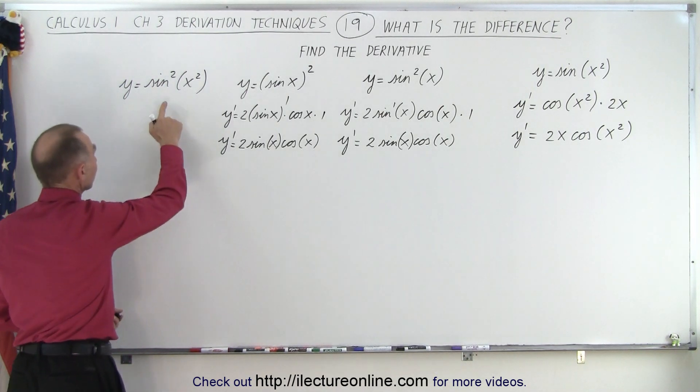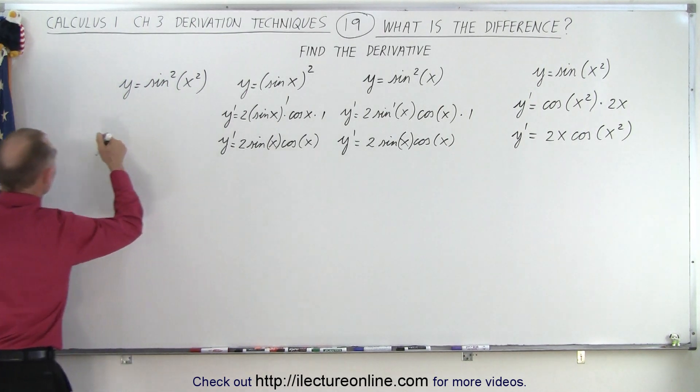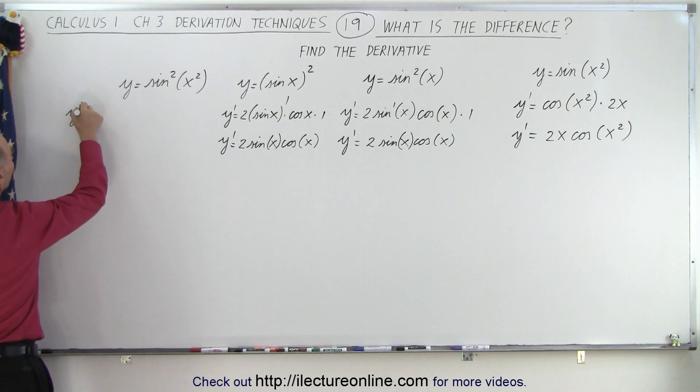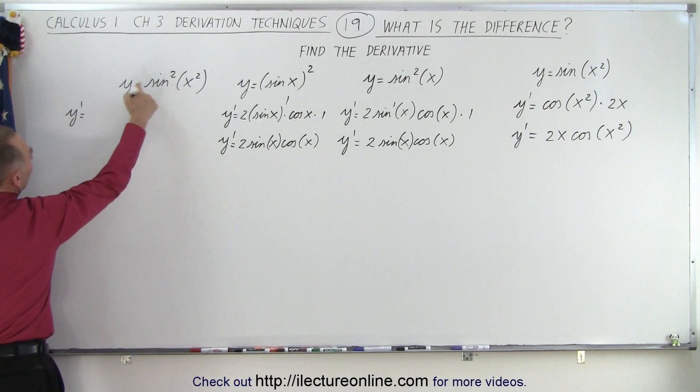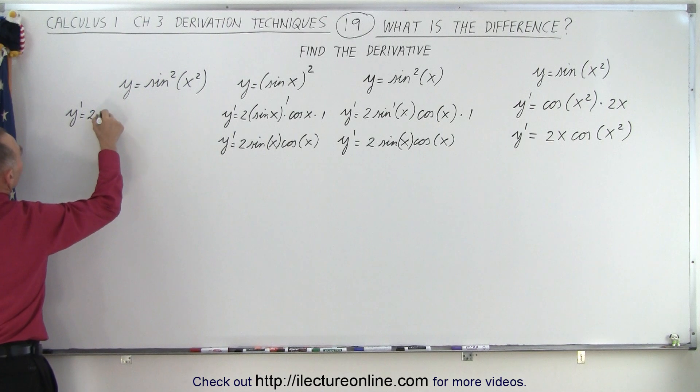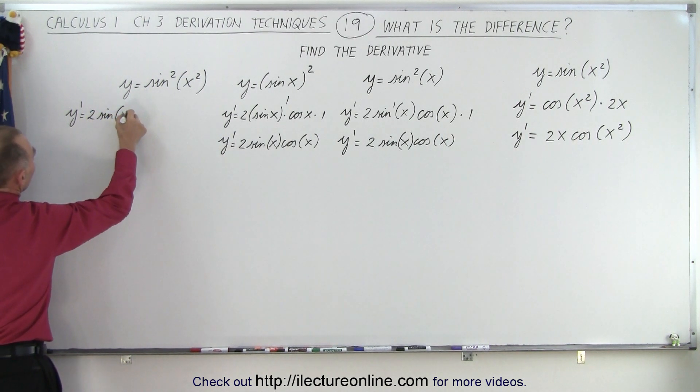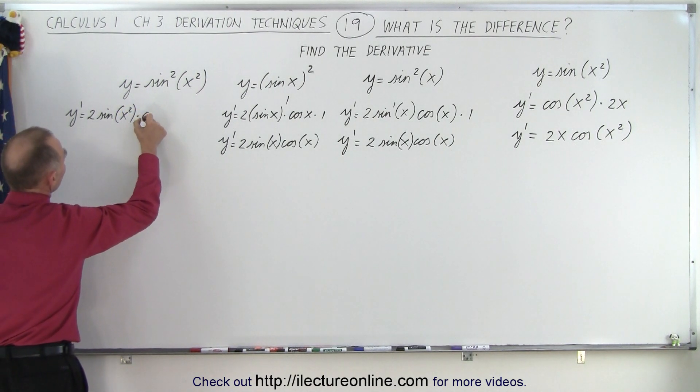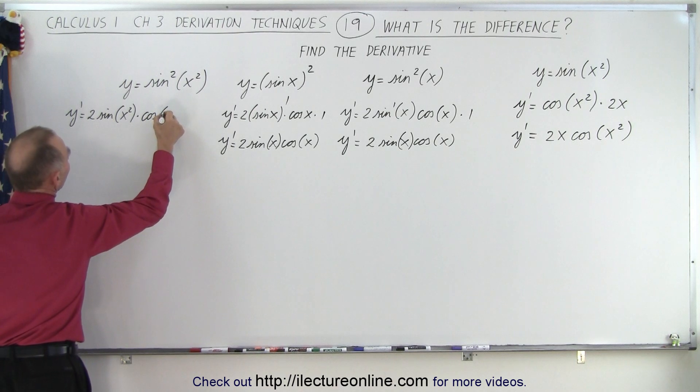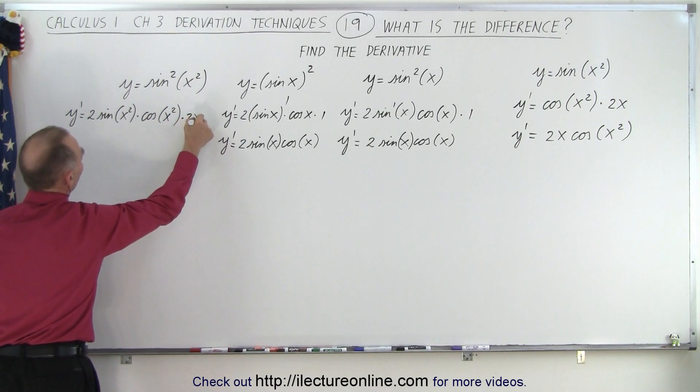And finally, when we get something like this, well, let's see. This becomes y prime is equal to the exponent in the front, 2 times the sine to the first power of x squared times the derivative of the sine, which would be the cosine, so we have the cosine of x squared times the derivative of x squared, which is times 2x.